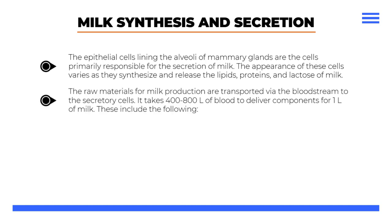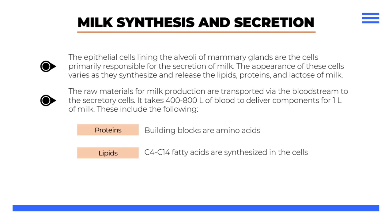The raw materials for milk production are transported via the bloodstream to the secretory cells. It takes 400 to 800 liters of blood to deliver components for 1 liter of milk. These include proteins whose building blocks are amino acids in the blood, wherein casein micelles and small aggregates thereof may begin aggregation in the Golgi vessels within the secretory cell. Also included are lipids in which C4 to C14 fatty acids are synthesized in the cell, and lactose that controls osmotic equilibrium and regulates the volume of milk secreted.